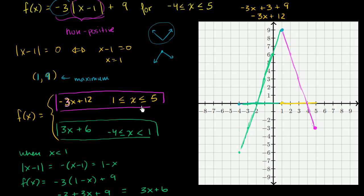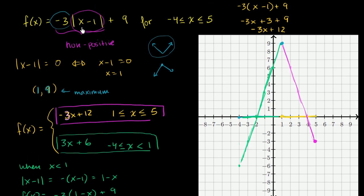And we are done — we have graphed this absolute value equation. The reason I did this is so that we understand it a little bit deeper. But there is a faster way: you could have just identified (1, 9) as the vertex, then evaluated f of negative 4 and f of 5 to find the endpoints, knowing that between the endpoints and the vertex you're essentially just dealing with lines. But now we understand it deeper, and that's always a little bit more exciting.